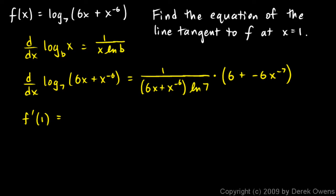So let's see what happens when we do that. We get 1 over, this is going to be 6 times 1, which is just 6, plus 1 to the negative 6, which is just 1, times natural log of 7, times, and over here we have 6 plus negative, and that's going to be a 1, or negative 6 times this, that's going to be a 1 to the negative 7.